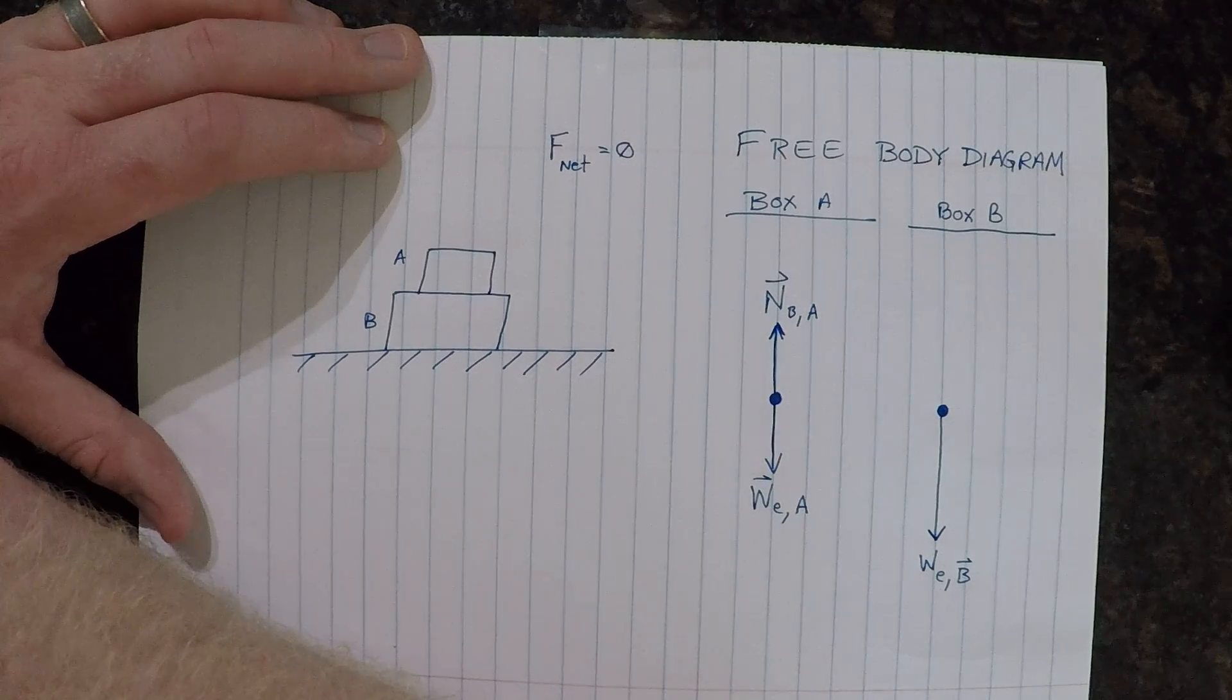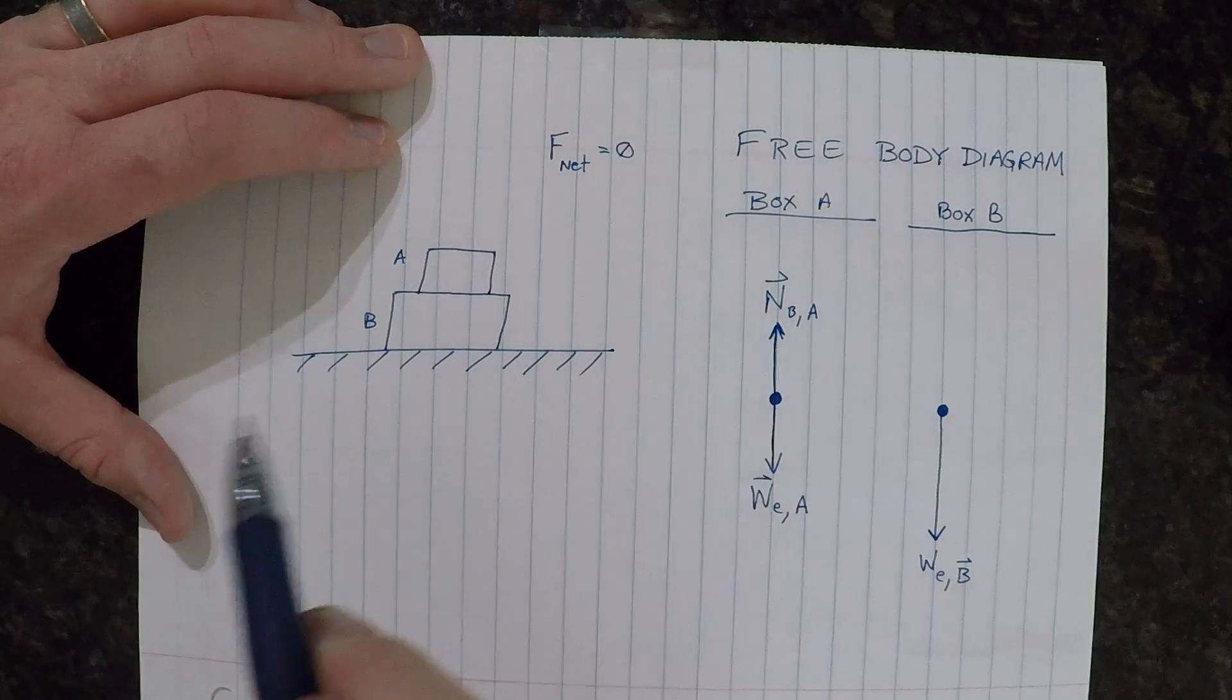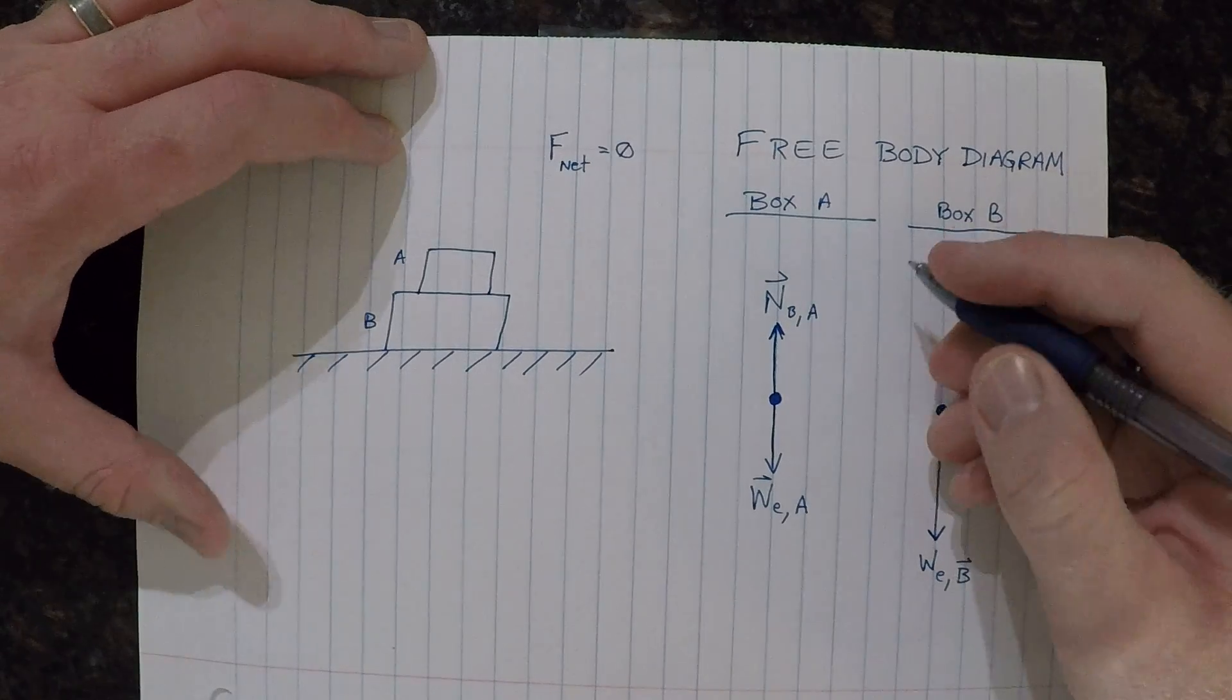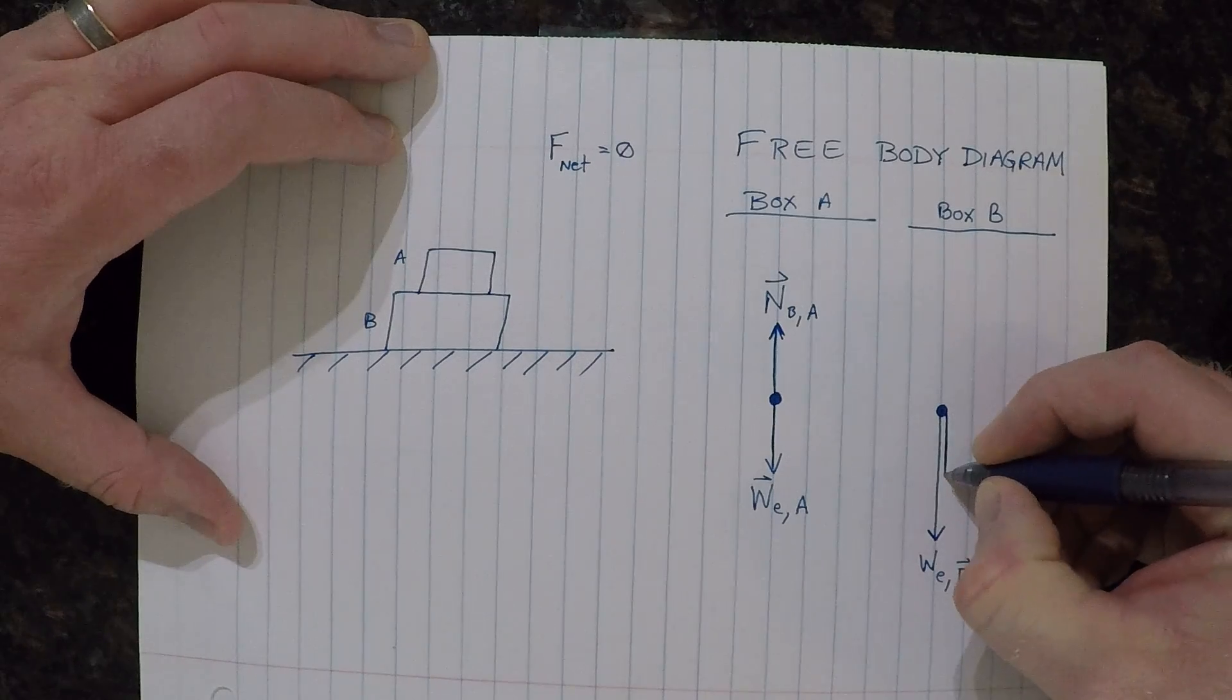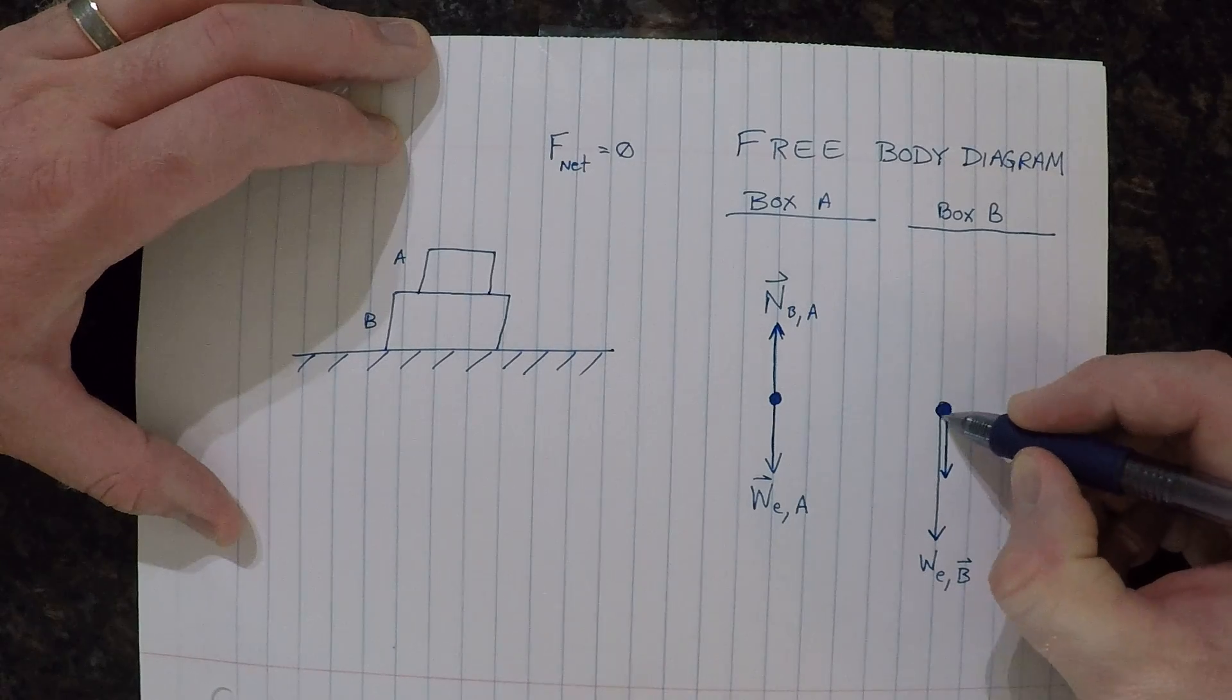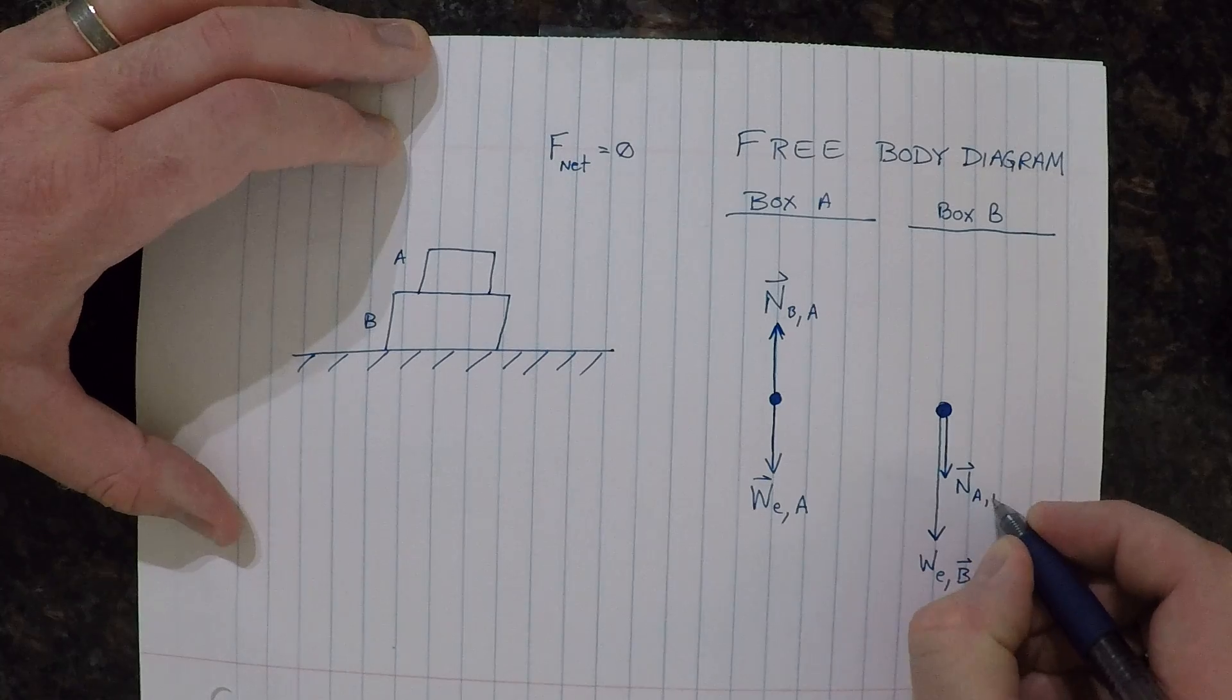Third law pair forces, as we call them, are the same type of force. So normal force and normal force. So the normal force of A on B has to be the same size. So I'll draw it about the same size here. Notice that the arrows are always starting at the dot and then pointing away. So this is the normal force of A on B.